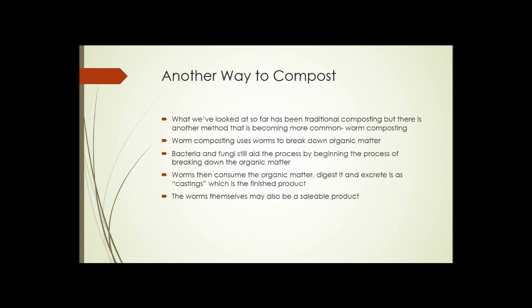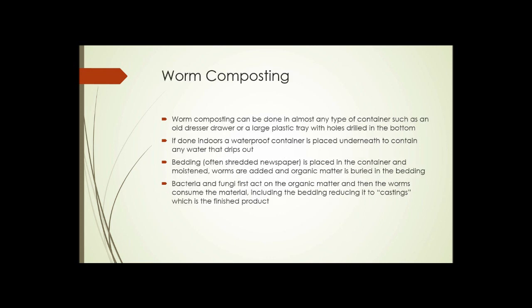In addition, the worms themselves may also be a saleable product. You can sell worms to fishermen, to people who might want to put them in their garden, or to people who might want to do worm composting. Worm composting can be done in almost any type of container, such as an old dresser drawer or a large plastic tray with holes drilled in the bottom. But if done indoors, a waterproof container is placed underneath to contain any water that drips out. Usually the organic matter that we're adding, the plant debris, contains a lot of water. And as it's being broken down by the fungi and bacteria and then by the worms, this water comes out and can drip through the material. So some sort of waterproof container underneath helps hold that water.